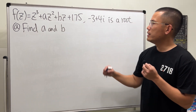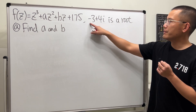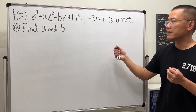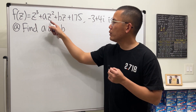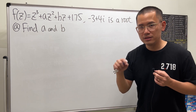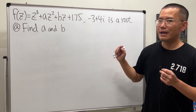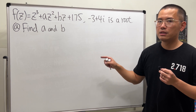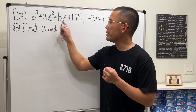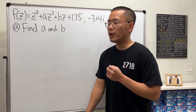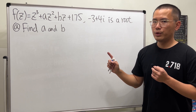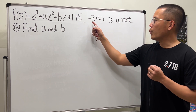We are given this cubic function, and we have negative 3 plus 4i as a root, meaning that if you substitute this into all the z's you will get zero. We have three parts — the first part is to find a and b.